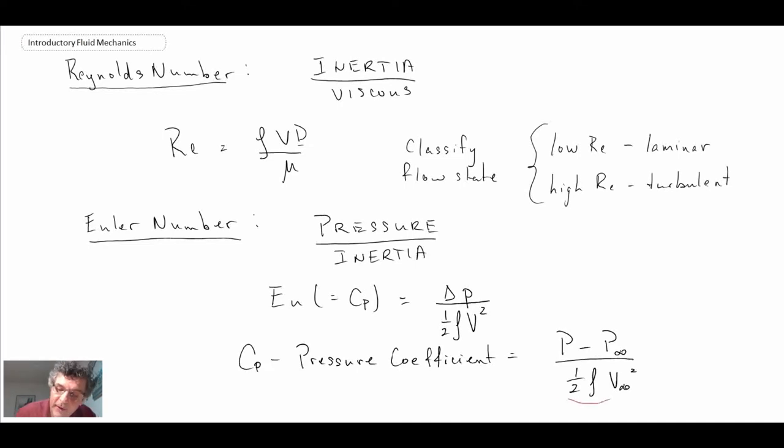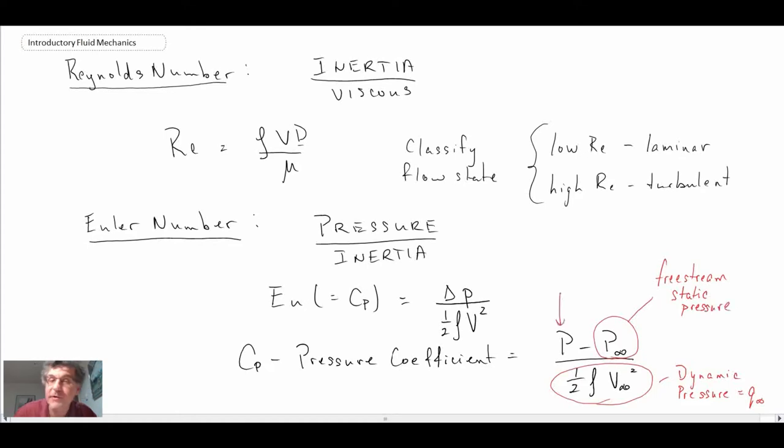Now, the term in the denominator here, this is often referred to as being dynamic pressure. It is sometimes given the symbol Q∞, and the other term in here, P∞, that is pressure freestream, or freestream static pressure. And then P, in this equation, obviously would be the pressure that is of interest at some given point in the flow field. So that is the pressure coefficient, and a lot of this derives from Bernoulli's equation.